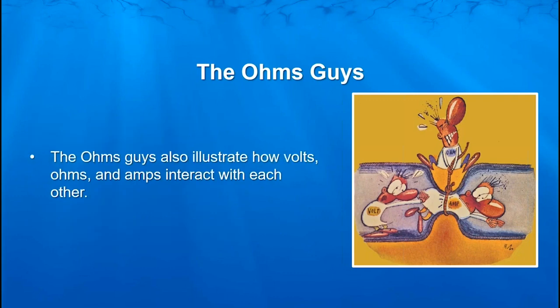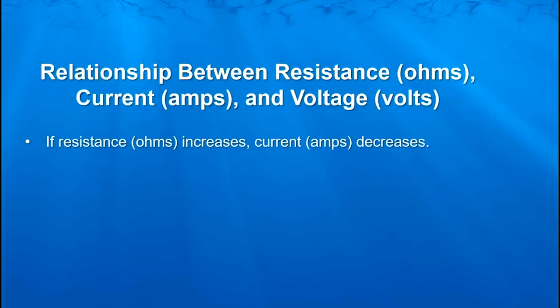This diagram also depicts how these three entities interact with each other. You have the volts trying to push the amperage through the wire, and the ohms — the resistance — any place there is resistance is going to slow that down through its travel. Our relationship between those three entities — resistance in ohms, current in amps, and voltage in volts — of course, are mathematical certainties.